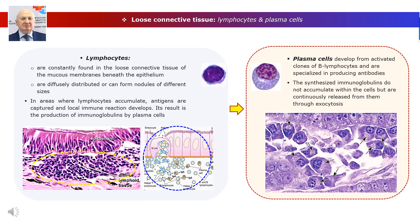Its result is the production of antibodies or immunoglobulins by plasma cells. Plasma cells, or plasmacytes, develop from activated clones of B lymphocytes and are specialized in producing antibodies. They are round cells with a diameter from 9 to 20 micrometers, featuring basophilic cytoplasm and a light area near the nucleus. The cytoplasm contains numerous systems of the granular endoplasmic reticulum and a well-developed Golgi complex. The synthesized immunoglobulins are continuously released from cells through exocytosis. A more detailed analysis of cellular mechanisms of immune reactions will be the subject of a separate lecture.